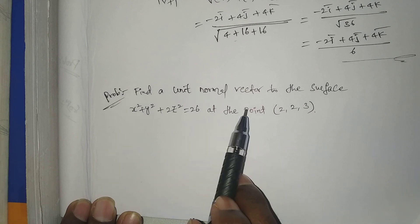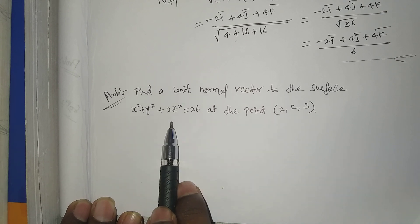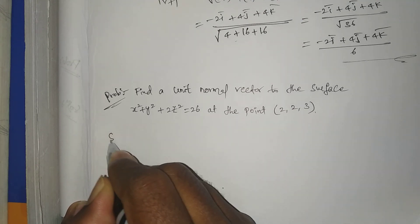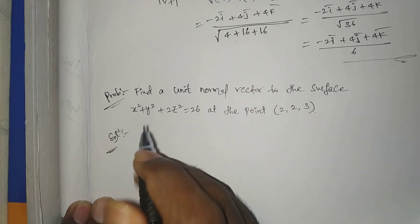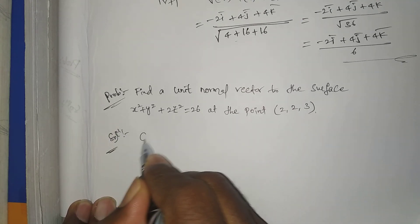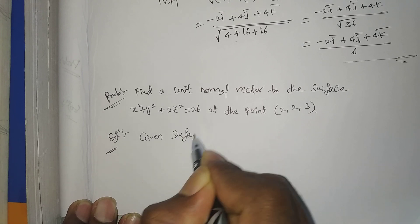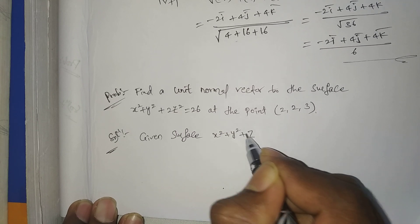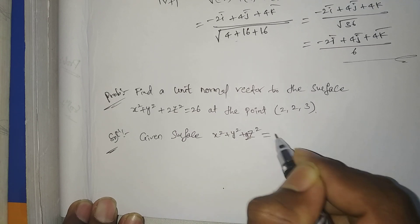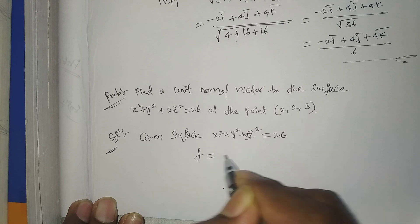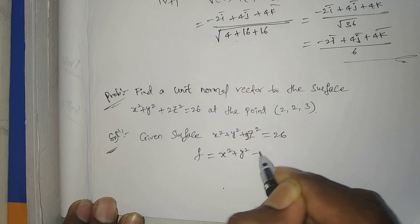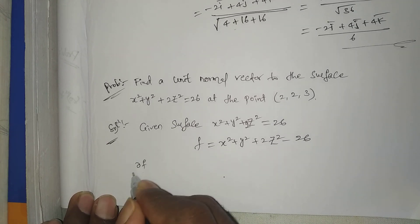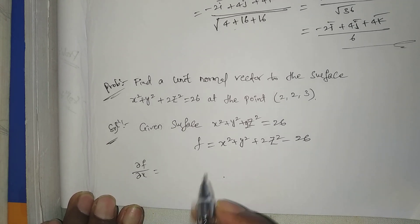Next problem: find the unit normal vector to the surface x squared plus y squared plus 2z squared equals 26 at the point (2, 2, 2). Let the given surface be F equals x squared plus y squared plus 2z squared minus 26. On differentiating, dou F by dou x equals 2x.